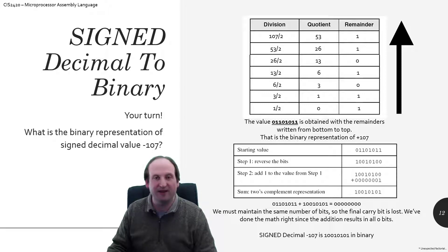The only thing left to do here, remaining, is to add the starting value to my resultant value, and again, I get all zeros with that carry bit that just falls right off. So I know, at the end of the day here, that negative 107 in binary is 10010101.